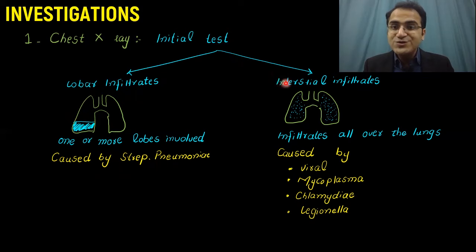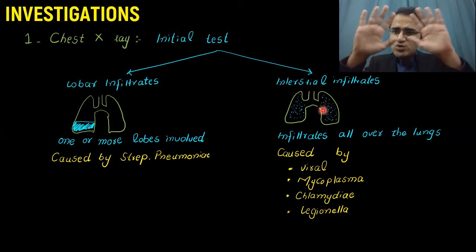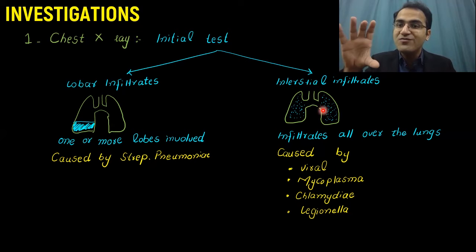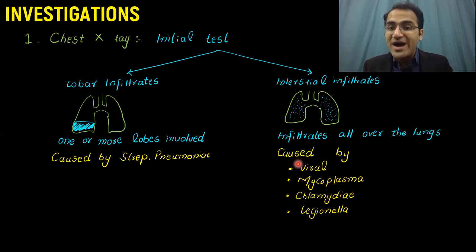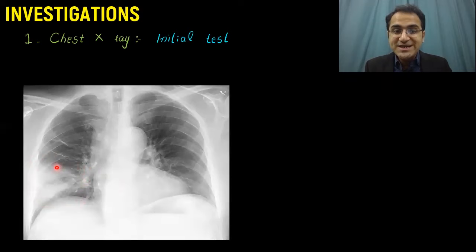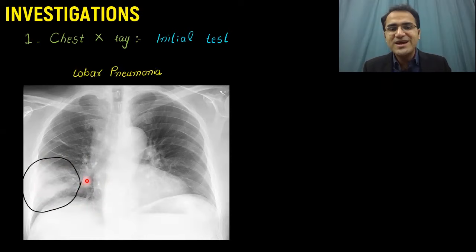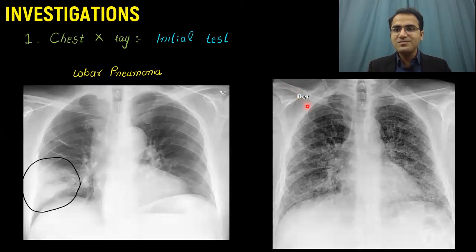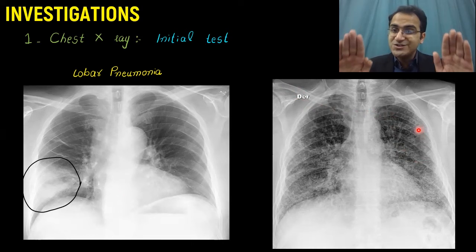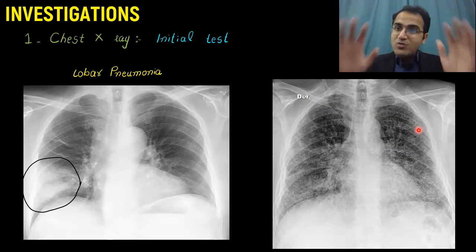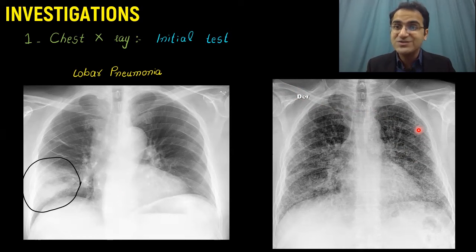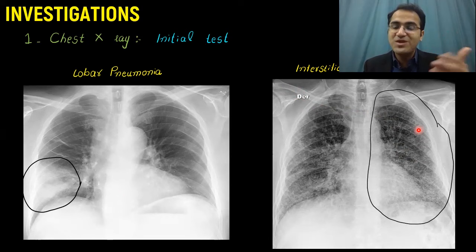You can also see interstitial infiltrates — patchy infiltrates throughout the lungs rather than concentrated in one lobe. These are mostly caused by viral infections, Mycoplasma pneumoniae, Chlamydia, and Legionella. Looking at a chest x-ray showing one lobe affected indicates lobar pneumonia, most commonly caused by Strep pneumoniae. A chest x-ray showing patchy infiltrates throughout both lungs, where a single lobe is not affected, represents interstitial pneumonia caused by viruses, mycoplasma, Legionella, and chlamydia. So the chest x-ray gives you a hint about the type of pneumonia and the likely organism.